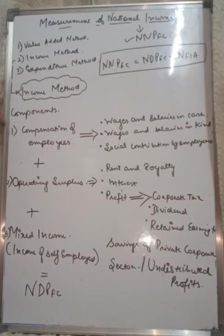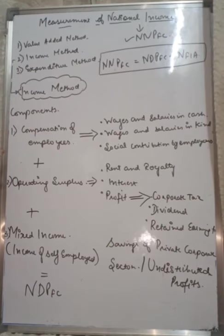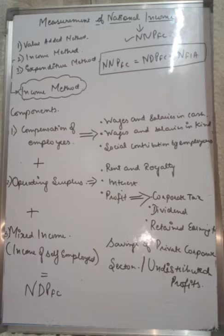Today we are going to discuss the income method. In the income method, we take all factor incomes. First, what is the meaning of factor income? There are basically two types of income: one is factor income and the other is transfer income. Factor income is what you earn by rendering some services, while transfer income is what you earn without rendering any service.